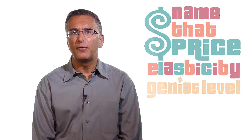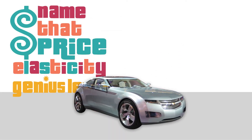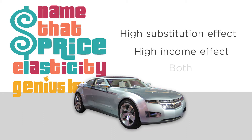Round one, genius level: Chevy automobiles. We said before that demand is elastic. But is this because of a high substitution effect, a high income effect, or both? Pause the video and take a moment to think. The answer is both. The substitution effect for Chevys is really high because there are a lot of other car brands that are just as good. The income effect is also important — Chevys cost so much that a price increase has a meaningful effect on your overall budget. Cars are typically normal goods, so when you have less money, you buy fewer cars. There's a huge substitution effect, and the income effect compounds it.